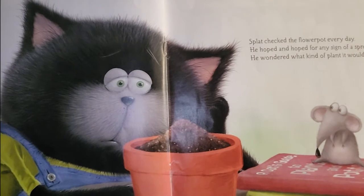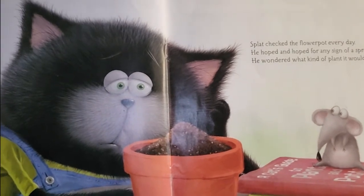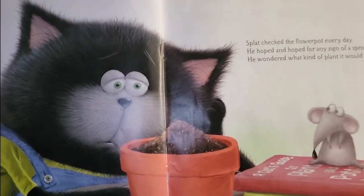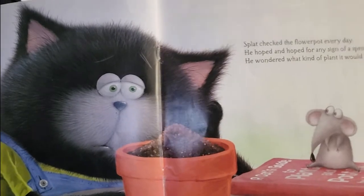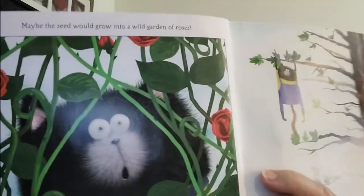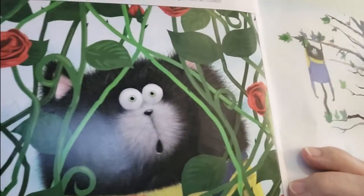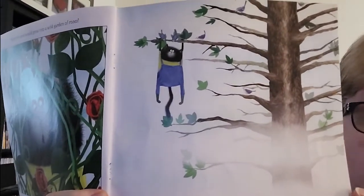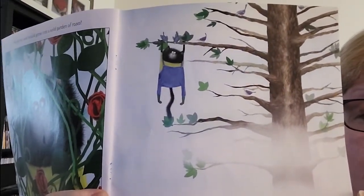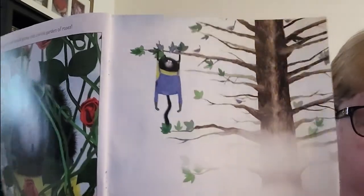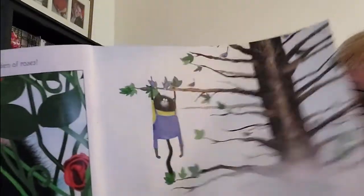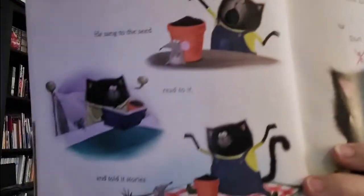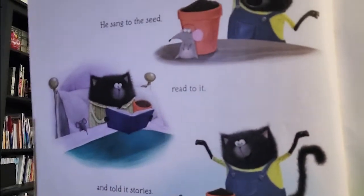Splat checked the flower pot every day. He hoped and hoped for any sign of a sprout. He wondered what kind of a plant it would be. Maybe the seed would grow into a garden of wild roses. Or maybe the seed would grow into a tree as tall as the sky.